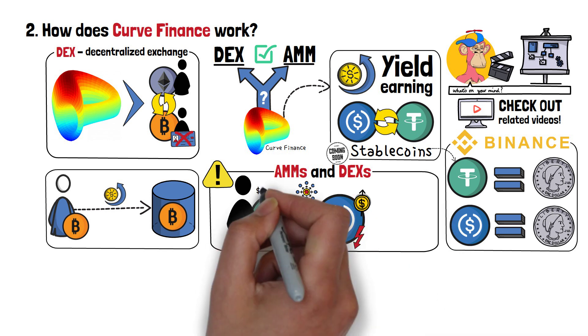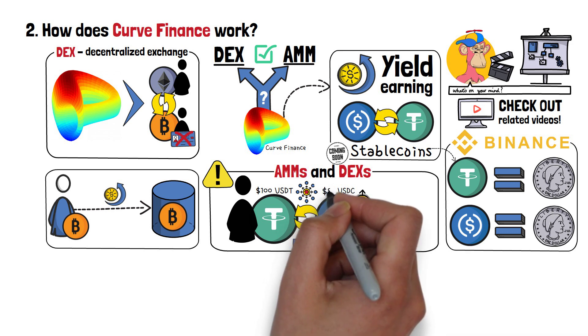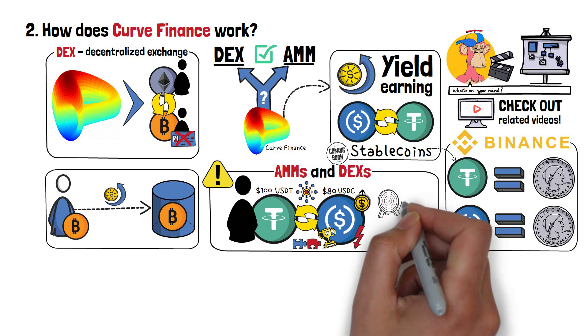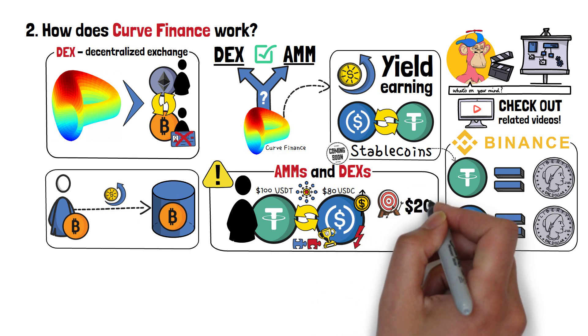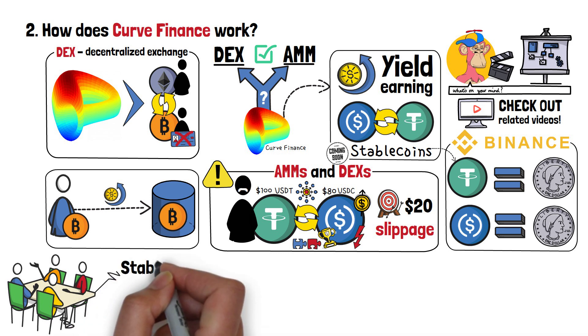Imagine that you have $100 worth of USDT stablecoin. You want to swap it to USDC, another very popular stablecoin. However, in return, you only get $80 worth of USDC, since there was a major shortage of the coin on that AMM. The $20 that you've lost is called slippage. As you can probably guess, that's not exactly ideal. This is why a group of people came together in order to search for a way to reduce the slippage as much as possible. The result was Stableswap.